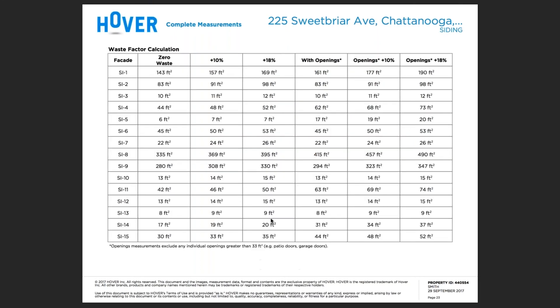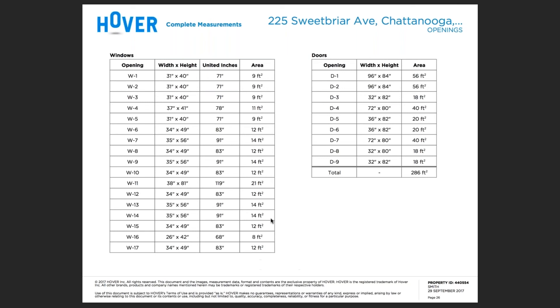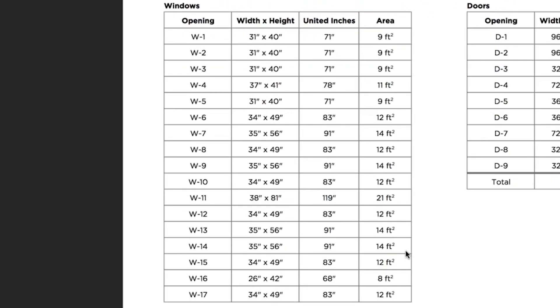Waste factor calculation tables will be provided to you by individual siding wall area as well. In the event that you're doing a partial job, you'll be able to extract or calculate your waste factor based on this table. The openings tables will provide you a complete window and door schedule for the entire property, labeling each individual window, giving you the width, the height, united inches, and the area of the opening.